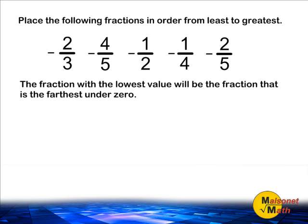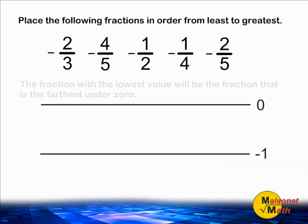To figure out in which order we should place these negative fractions, we can use the following strategy. Start by drawing a line and marking that with the number zero, and underneath that line make another one that is negative one. The space in between zero and negative one represents one whole. Notice that we wrote negative one underneath zero because negative one is below zero.